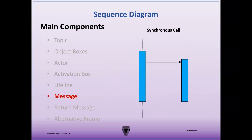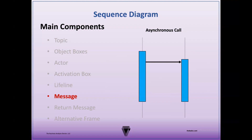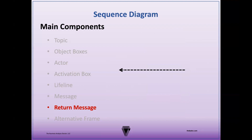There are two general types of messages. The first is the synchronous call, which is a message that transfers control to the receiving object — the sender cannot send new information until a return message is received. The next type is an asynchronous call, which allows the object to continue processing after sending the information. The object may send many signals concurrently, but can only receive one return message at a time.